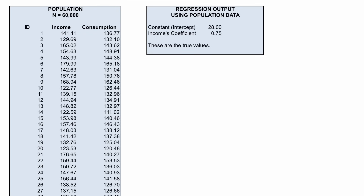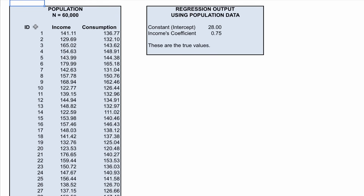So in this case we have 60,000 observations. Based on this information we computed our model — we ran the regression using the entire population and found that the intercept is 28 while the coefficient for income is 0.75. This tells us that in reality, on average across the entire population, for every $100 more of income, a family's consumption grows by $75.